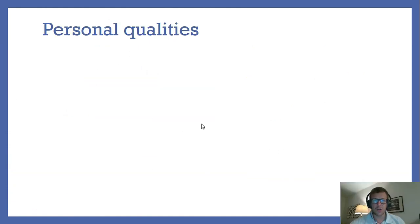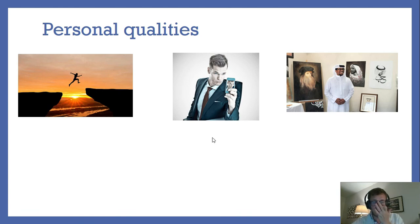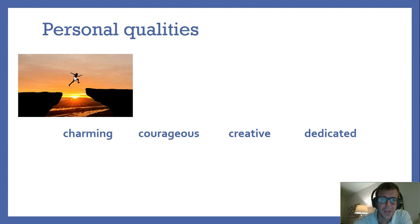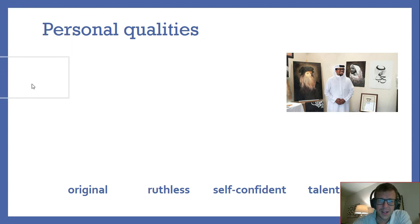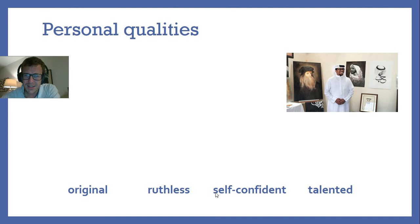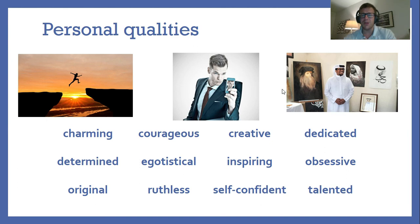Finally, we had personal qualities — about 12 words, some difficult to spell. Charming. Courageous — jumping across a big gap. Creative. Dedicated. Determined. Egotistical — someone very concerned with their appearance. Inspiring. Obsessive. Original. Ruthless. Self-confident. And talented — for example, a talented painter. These are words you could use to describe yourself in your work or studies.